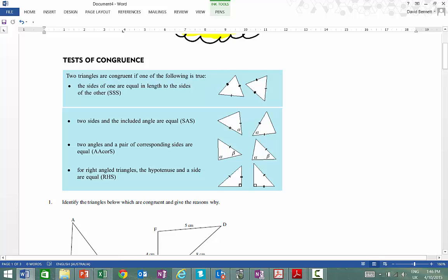The second test is if two sides are the same and the included angle is the same, then we would classify them as congruent triangles, not similar but congruent, exactly the same.